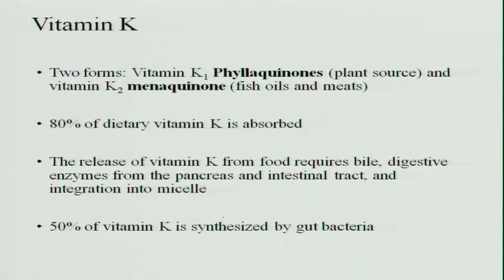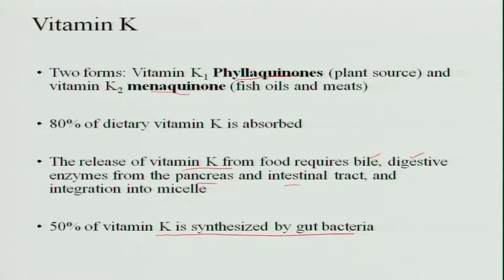The next fat-soluble vitamin is vitamin K. There are two forms: vitamin K1, phylloquinone, found in plant sources, and vitamin K2, menaquinone, found in fish oils and meats. About 80 percent of the vitamin K taken in is absorbed by the body. Its release from food requires bile, digestive enzymes from the pancreas and intestinal tract, and integration into the micellae. Additionally, 50 percent of the vitamin K is synthesized by the gut bacteria.